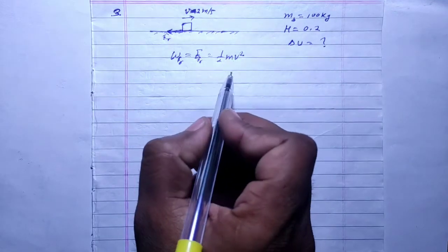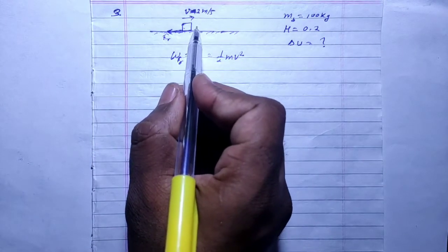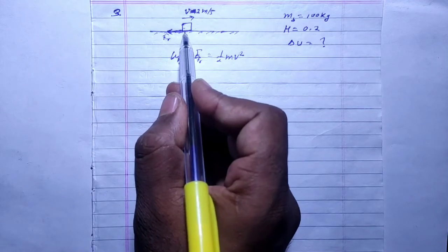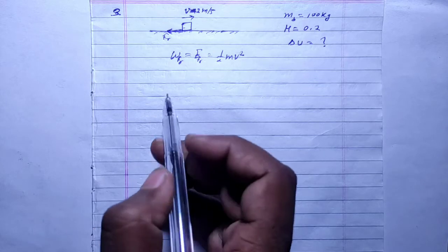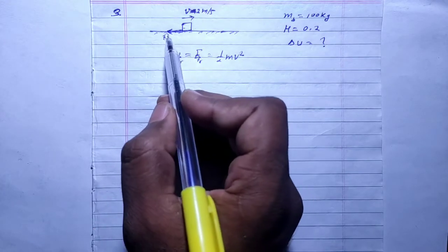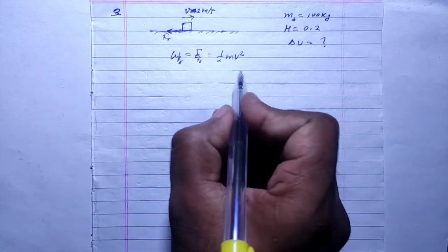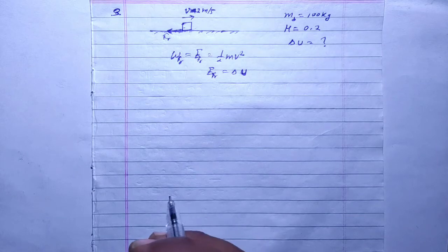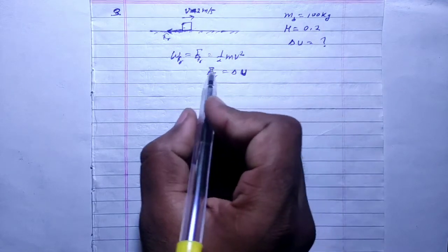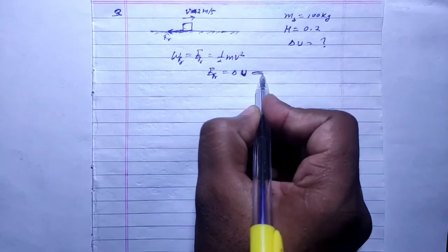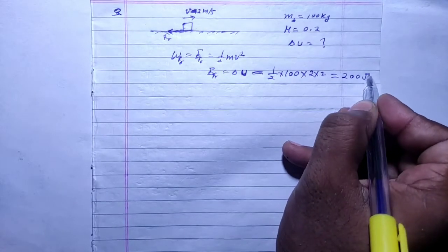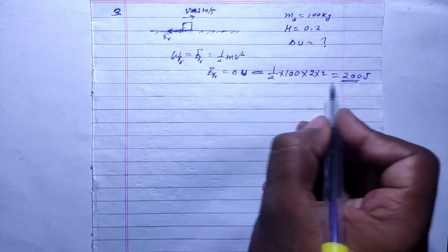The first question asks for the change in internal energy. Internal energy increase comes from friction — friction develops heat, which increases the internal (microscopic) energy of the system. So the change in internal energy equals the friction energy, which equals the initial kinetic energy: ½ × m × v² = ½ × 100 × 2² = ½ × 100 × 4 = 200 J. So the internal energy increases by 200 Joules.